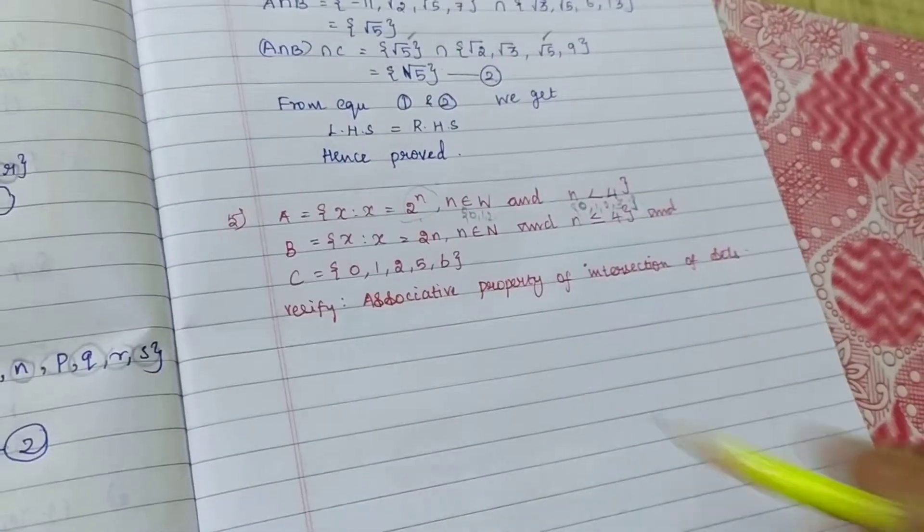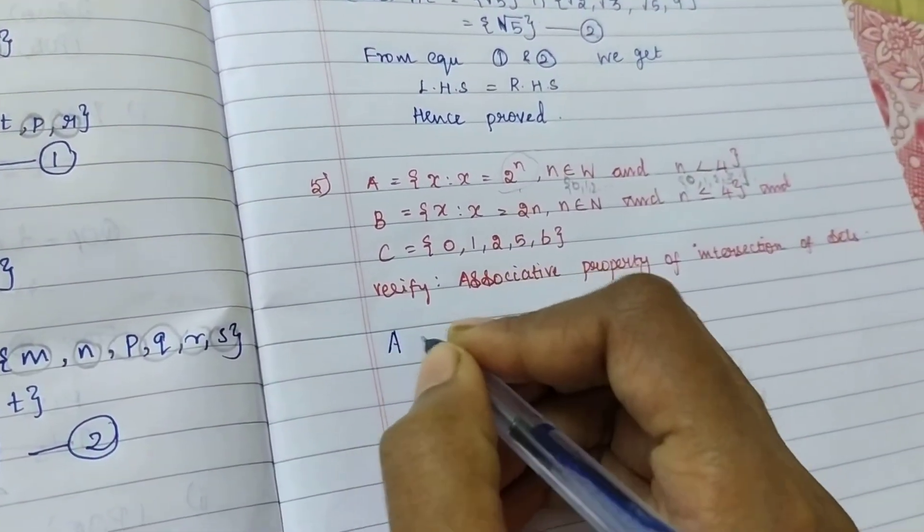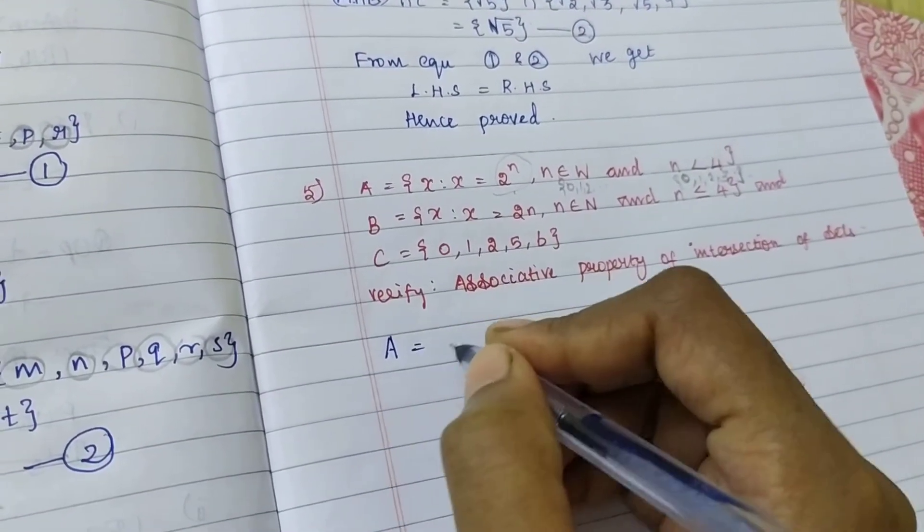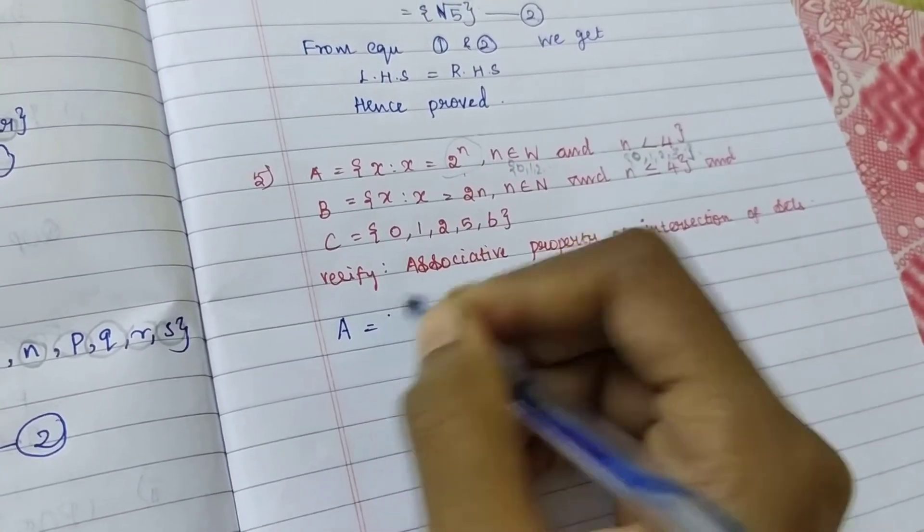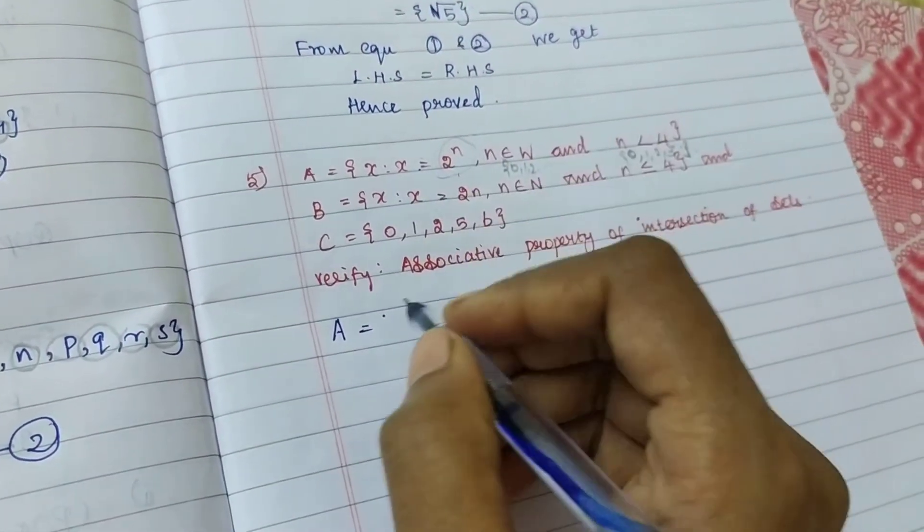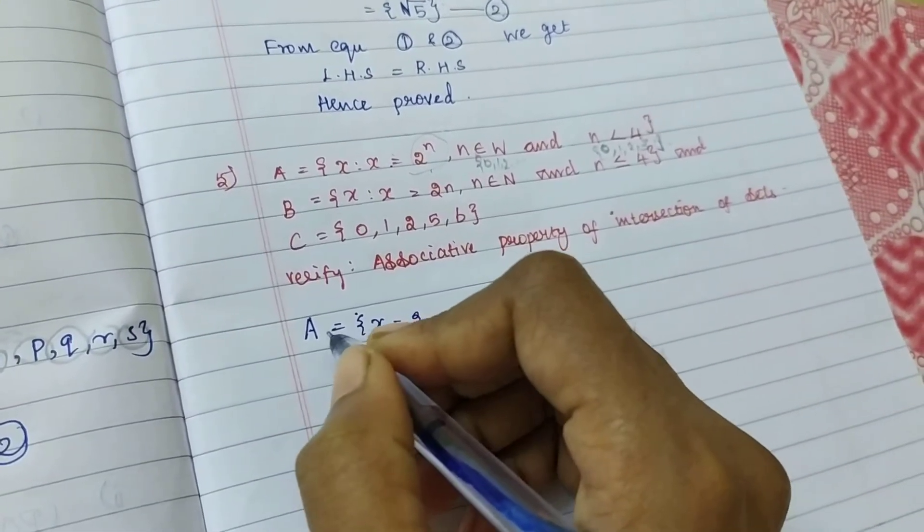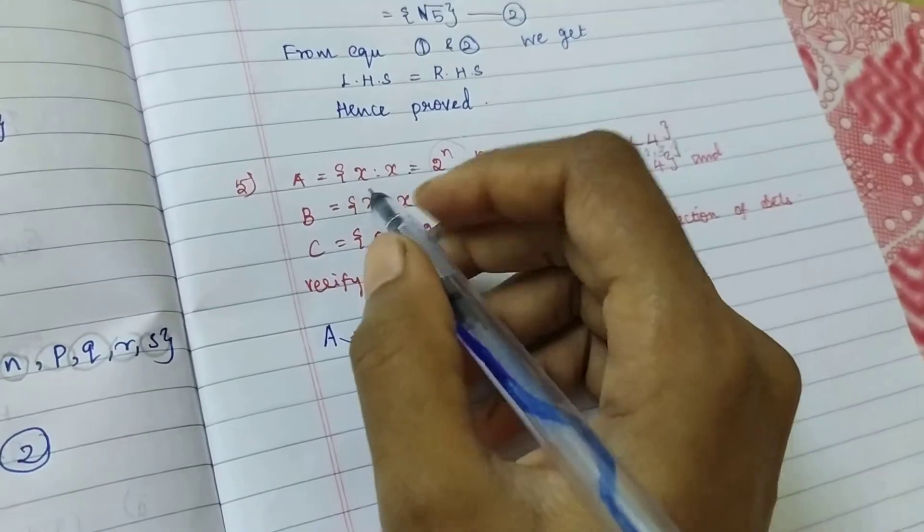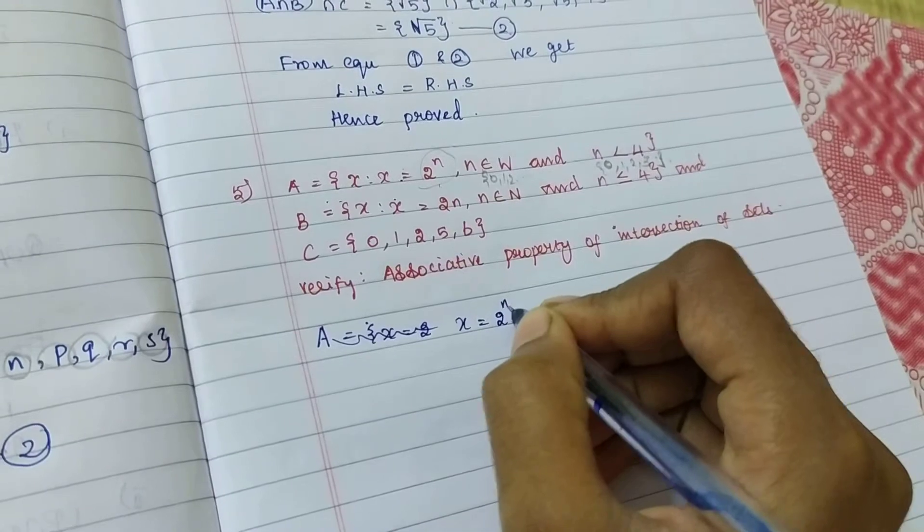So, first I am going to find out my A. A equal to, what they given? They given X equal to 2 power N. So, X equal to 2 power N. So my N whole number.